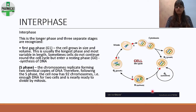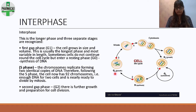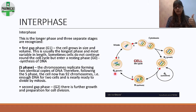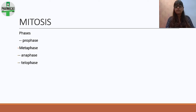Then there is the G2 phase — the second gap phase — during which there is growth and preparation for cell division. To summarize interphase: it has three stages — G1 (first gap phase), S (synthesis), and G2 (second gap phase). Important to also remember is the G0 or quiescent phase.